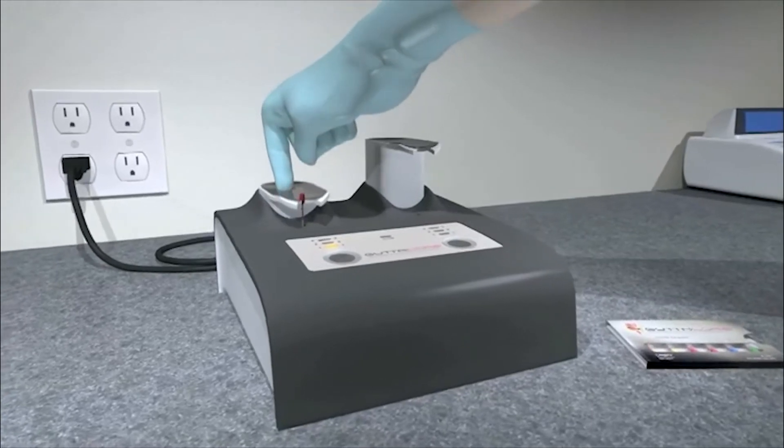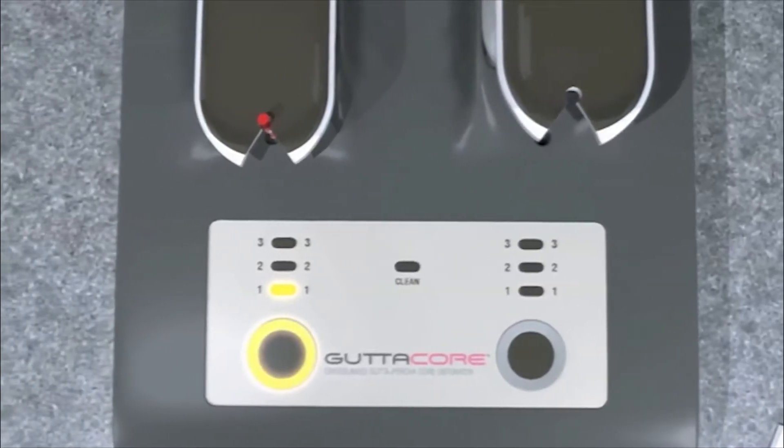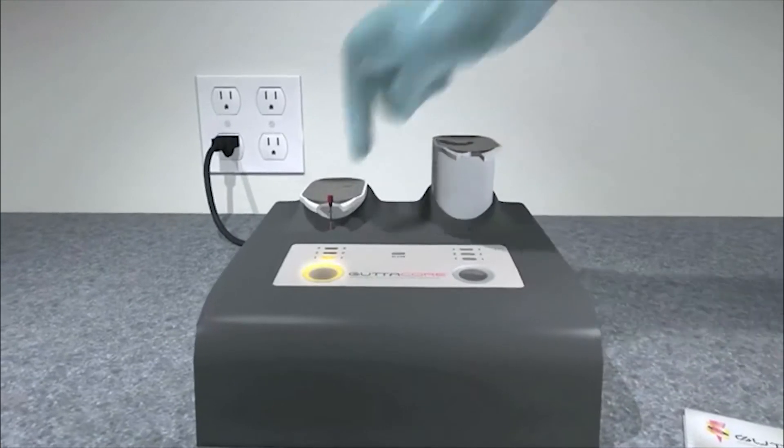Press the oven arm into the heating chamber and heat on the first setting. When heated, press again to release.